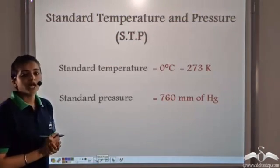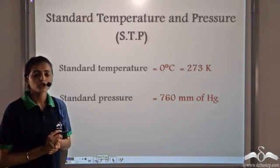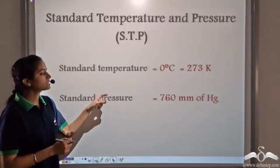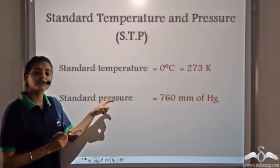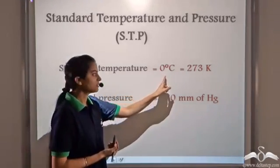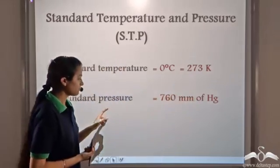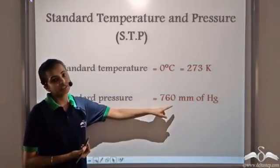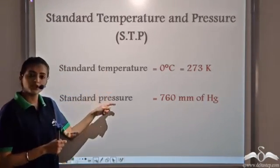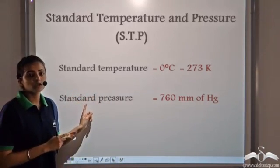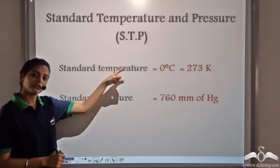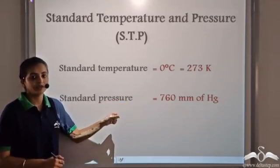The volume of a gas changes remarkably with changes in pressure and temperature, so it becomes necessary to choose some standard values. The standard temperature is taken to be 0 degrees Celsius, which is 273 Kelvin, and the standard pressure is 760 millimetres of mercury. These standard values are valid all across the world.